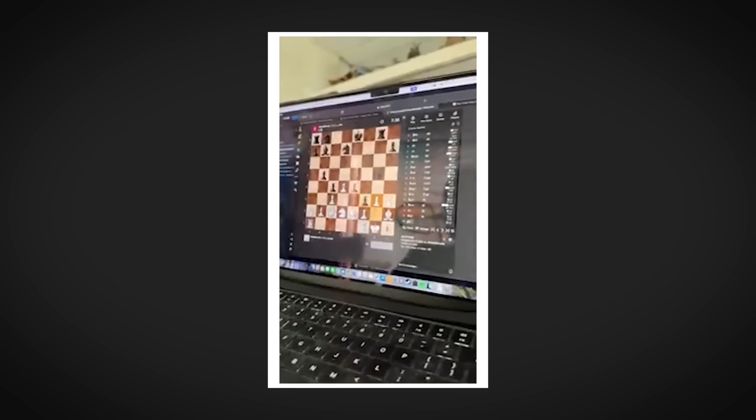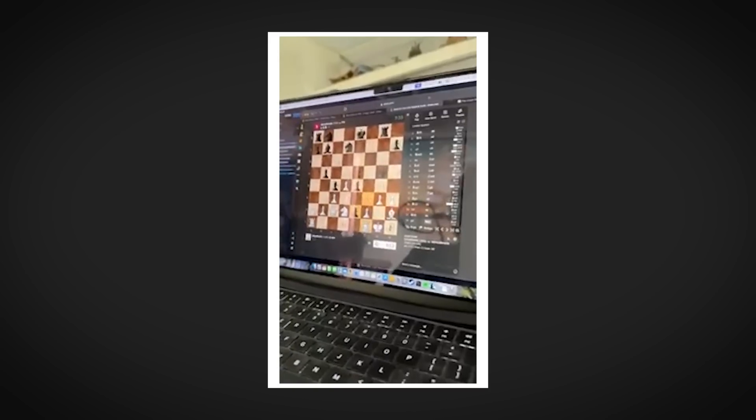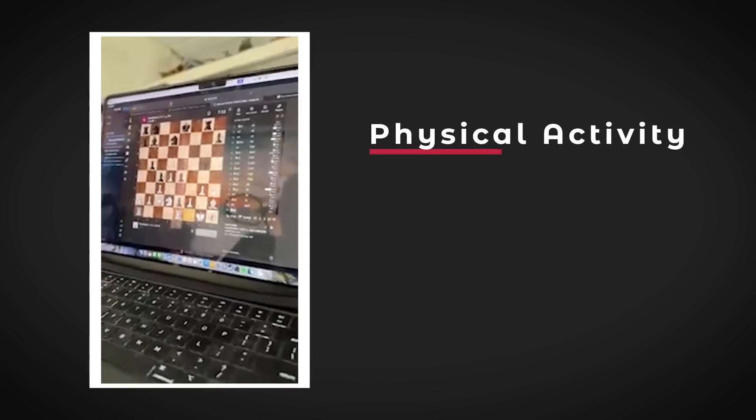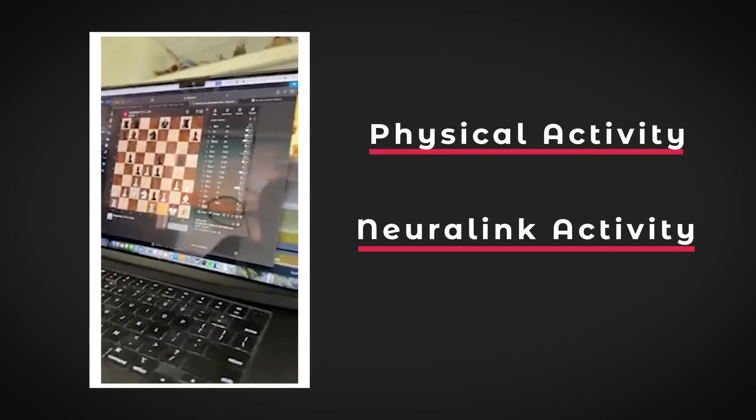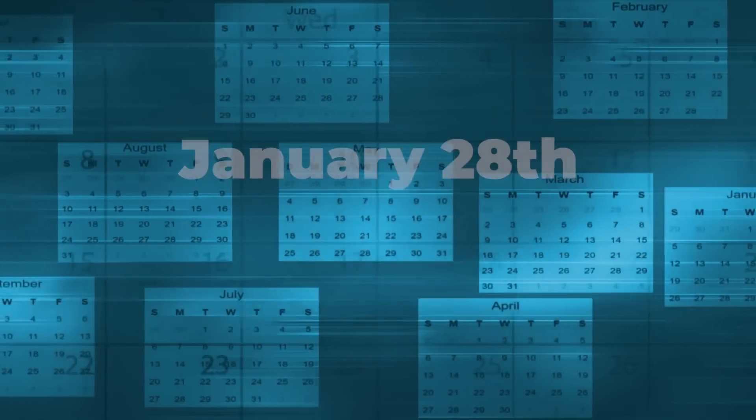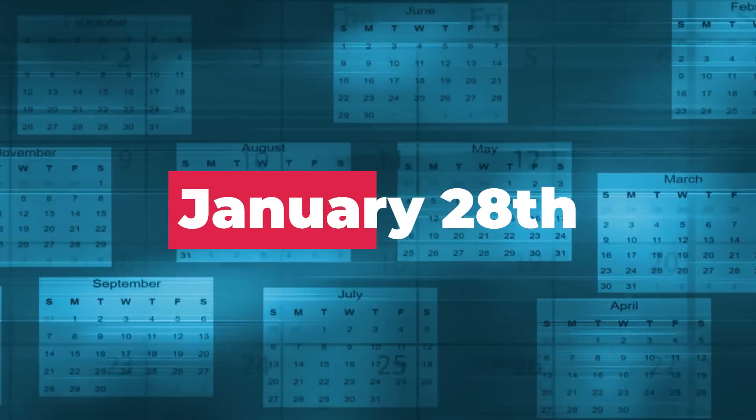You can tell how effortless this is because as Nolan is talking to his Neuralink engineer and to the camera, he is also continuing to play chess at the same time. So he can already multitask between physical activity and Neuralink activity. And Nolan has only had his implant since January 28th.